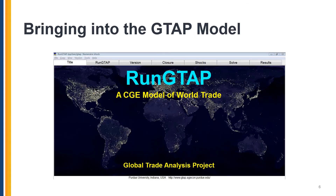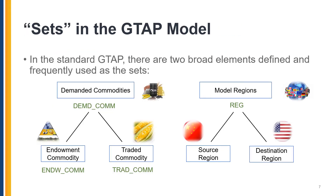Finally, let's bring these concepts into the GTAP model. What has been most commonly seen in the standard GTAP model are the demanded commodities and model regions. The commodities being demanded consist of endowments such as labor, capital, and land, and traded commodities that are being produced and exported, such as corn and soybeans. The model regions include the source regions where the goods are produced and supplied from, and the destination regions where the goods are delivered to.